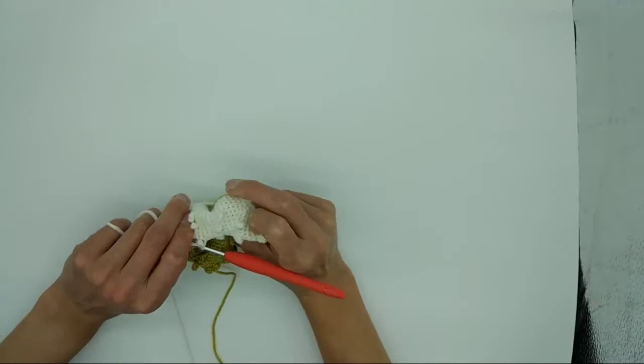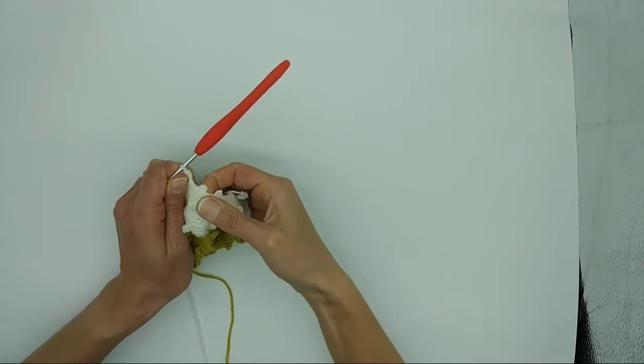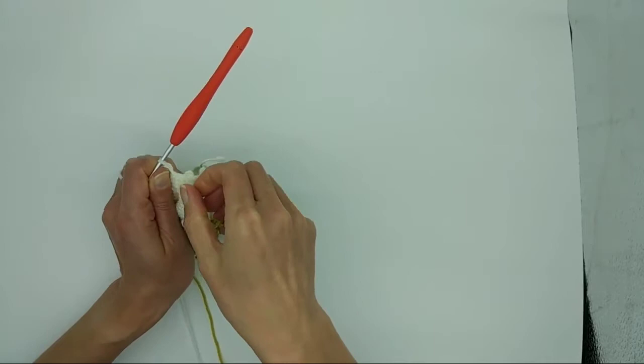Now the stitches are going to appear on the reverse side of your work. So to get them through to the right side, you've just got to gently push them through. They will come through to the right side. And there we go.